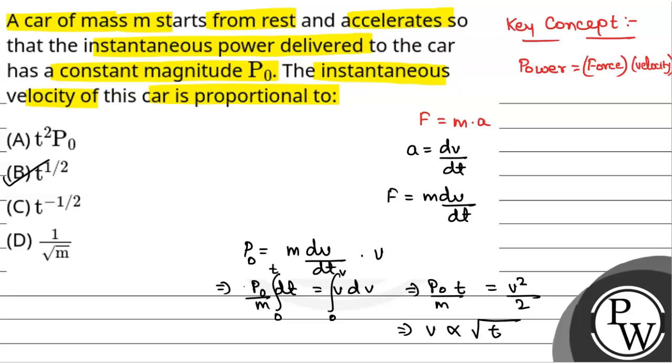And also, V is directly proportional to root over n. Sorry, 1 by root over n. V is also directly proportional to 1 by root over n. The two options will be option B and D.